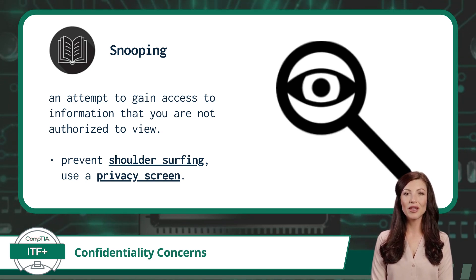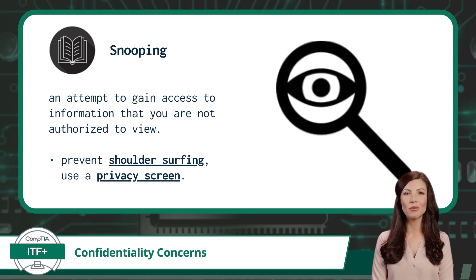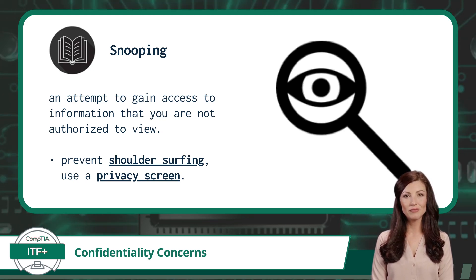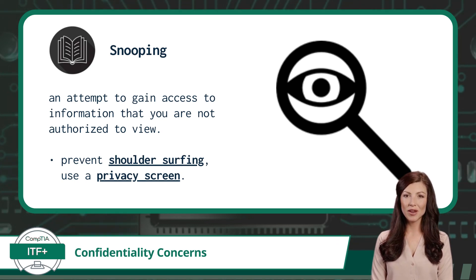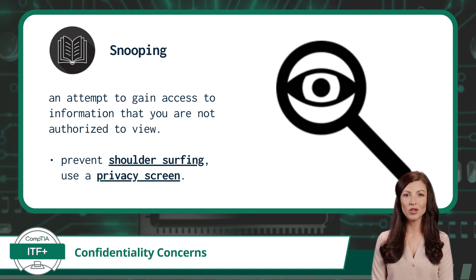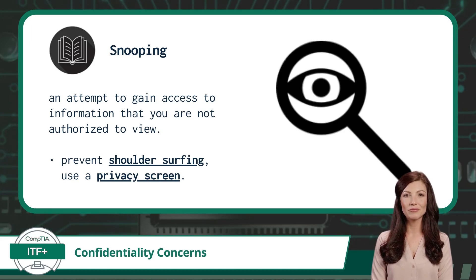First up when it comes to confidentiality concerns, we have snooping. Snooping is an attempt to gain access to information that you are not authorized to view. A perfect example of snooping is shoulder surfing, which is a situation where an attacker merely views a user's device screen or keypad, often by peering over a user's shoulder, in order to obtain confidential information.